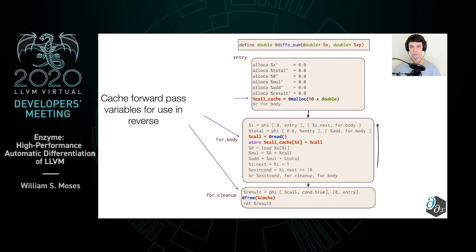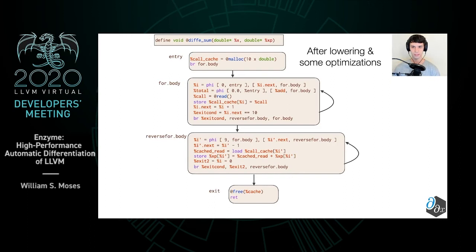We also make sure to free any corresponding memory we create. After some lowering and optimizations, we get the following code, which first includes the forward pass that also stores the calls to read inside of an array, as well as the reverse pass, which uses those calls and creates the actual gradients. After a couple more optimizations, we get something that looks quite nice.